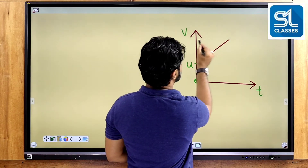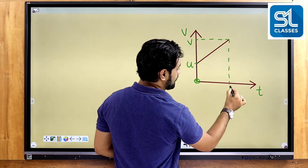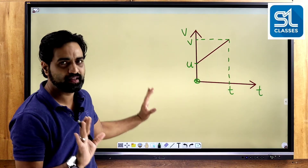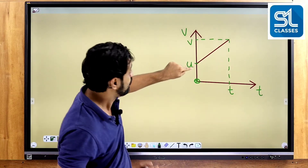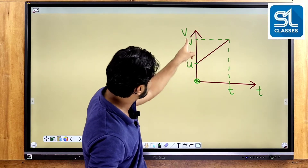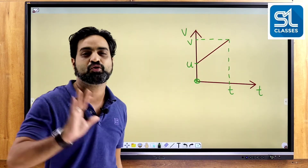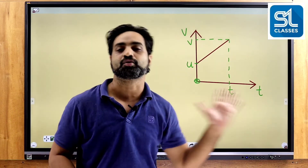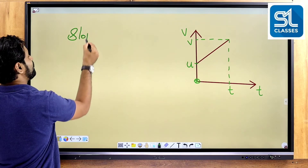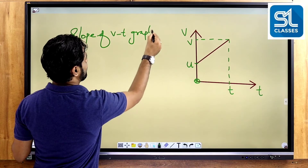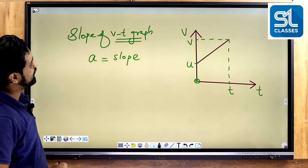The velocity is increased and increased and the final velocity is V. How much time? T. This graph is increasing. The velocity is increased and the initial value is U, not zero, and the final value is V. You will take U and V. First, we will derive this equation: V equal to U plus AT, S equal to UT plus AT square. The slope of the VT graph is called acceleration. So acceleration is equal to the slope of the VT graph.